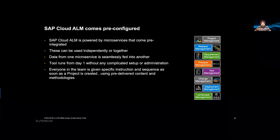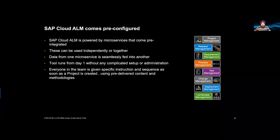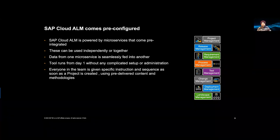A transition path is also possible: you can start with fit-to-standard workshops, process management, and requirements collection, then later expand into deployment management, landscape management, and change management. It's up to you to decide your working style. From day one, project management creates a task list distributed with roles, reducing time spent figuring out what to do, when, and who does what — all pre-thought, converting the SAP Activate methodology guidance into a simplified task list.